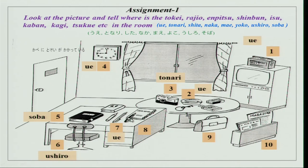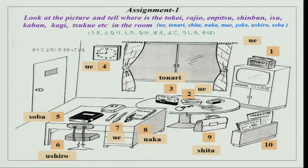Then again you have ue. Teiburu wa heya no naka ni arimasu. And so many others — shita: kaban wa tsukue no shita ni arimasu. And then the last one is shimbun naka. You can practice these with your partner. Answer or ask questions for locational nouns, which are equivalent to prepositions in English — in, at, on, besides, along — but they are used as locational nouns in Japanese.